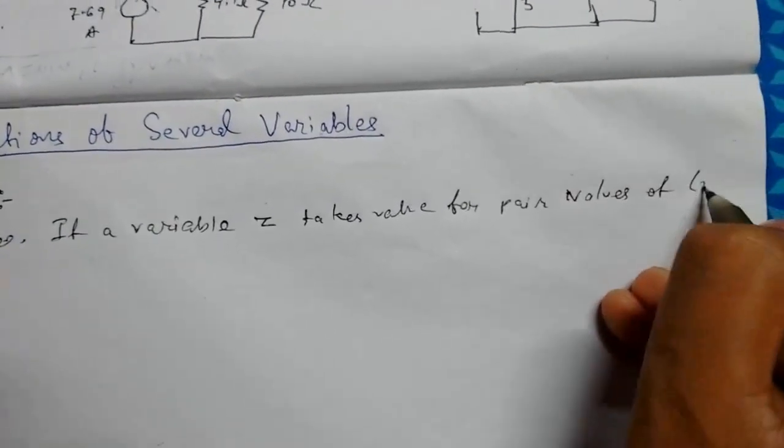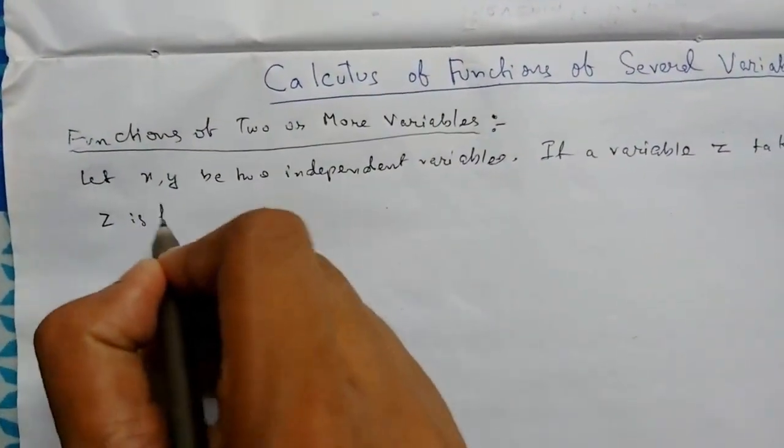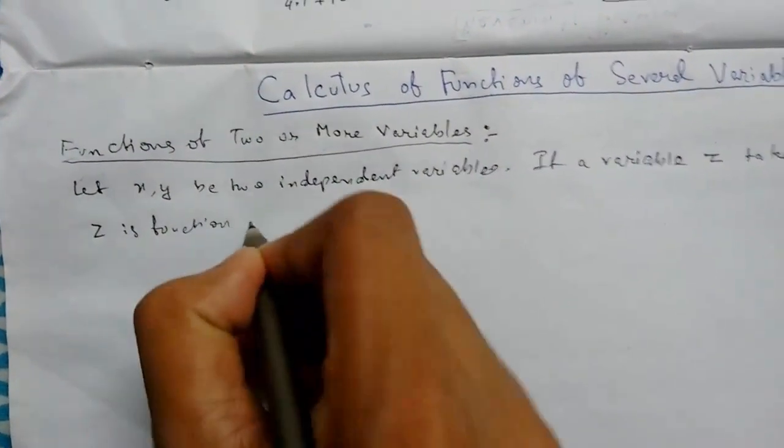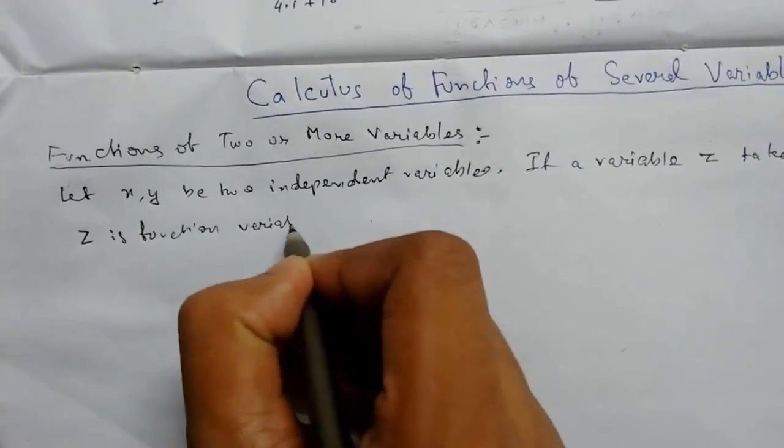Then we say z is a function of variables x comma y, or x and y.